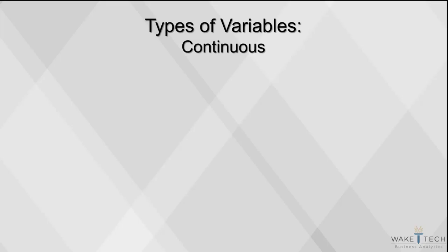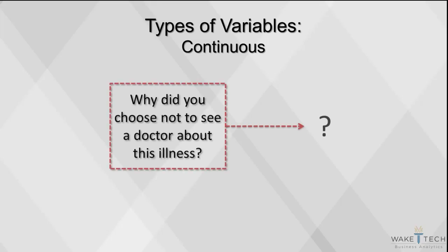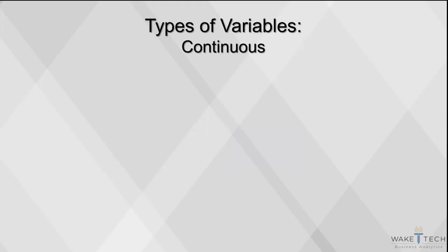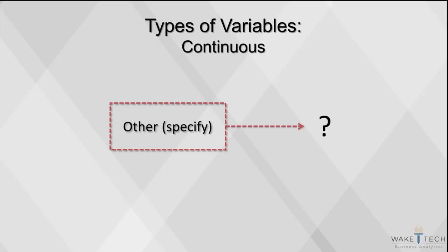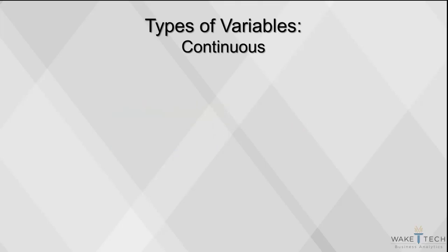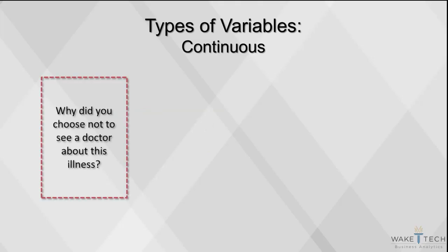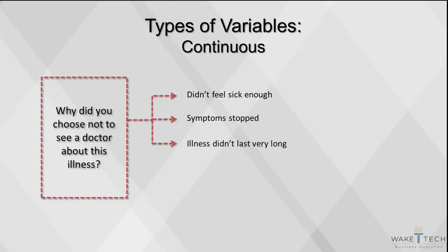You may also need to code responses from fill-in-the-blank and open-ended questions. With an open-ended question such as 'why did you choose not to see a doctor about this illness,' respondents will all answer differently. You may also offer an 'other, specify' option where respondents can write whatever response they choose. One way to analyze this information is to group together responses with similar themes — for example, responses like 'didn't feel sick enough,' 'symptoms stopped,' and 'the illness didn't last very long' could all be grouped as 'the illness was not severe.'